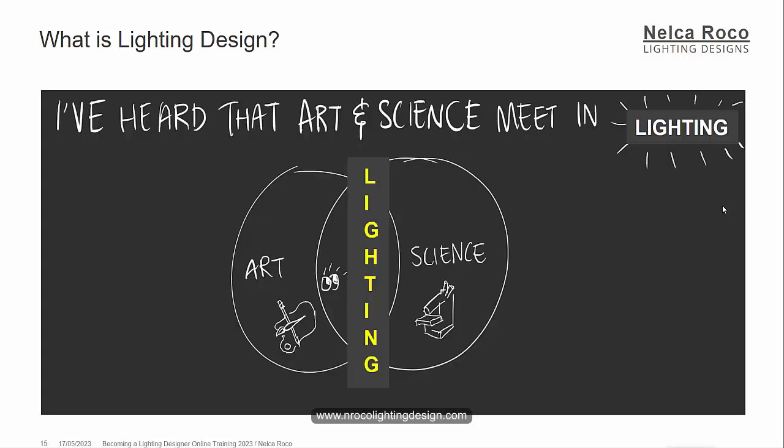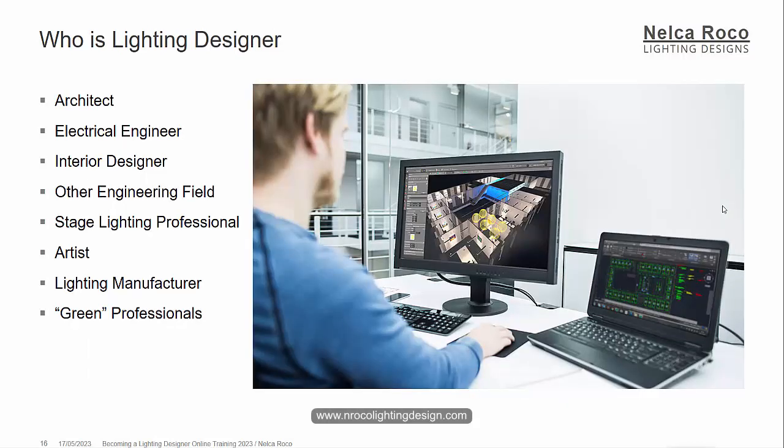People who say lighting is about art, or lighting is about science and technical, are both missing something. In reality, lighting design is both an art and a science. Whether you are an architect, an electrical engineer, or any professional with a technical or artistic background, you need to consider that lighting combines both. Lighting design sits in between art and science.